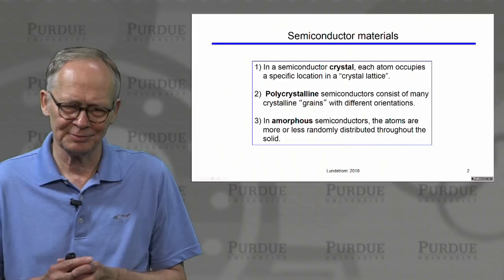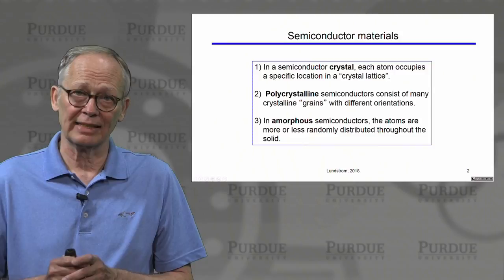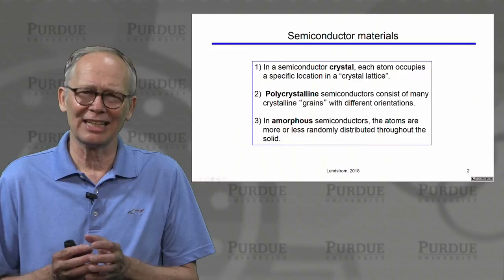It tends not to be completely random. We saw in the previous lecture that each silicon atom is surrounded by four nearest neighbors. In amorphous silicon, each silicon atom is surrounded on average by about four nearest neighbors.